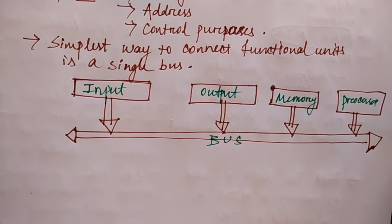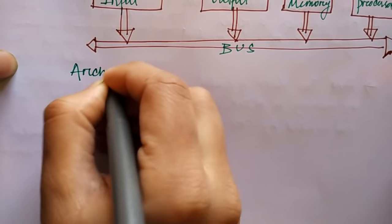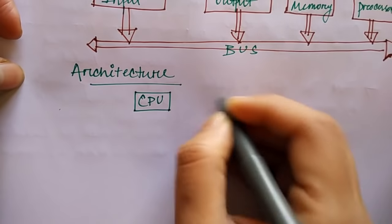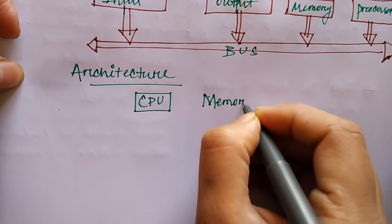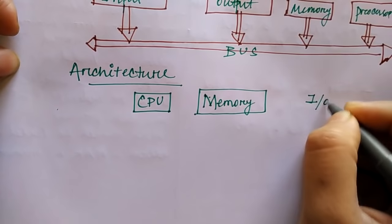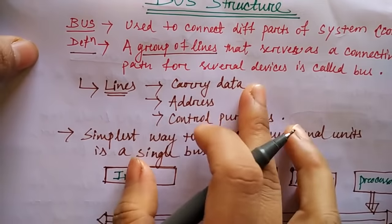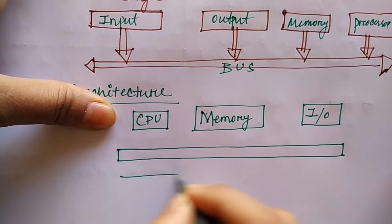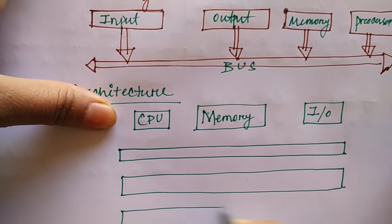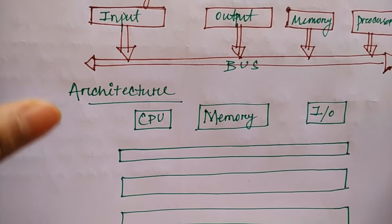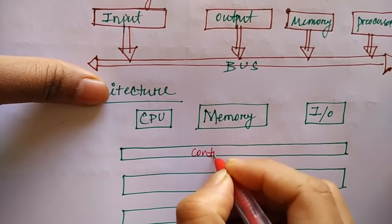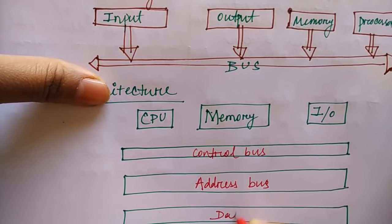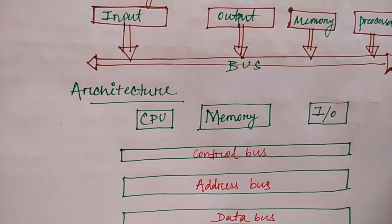This is a bus — now we will see the architecture of the bus. The bus architecture connects your CPU, your processor, your memory, and your I/O devices. The bus is of 3 types: one is the data bus, one is the address bus, and one is the control bus.